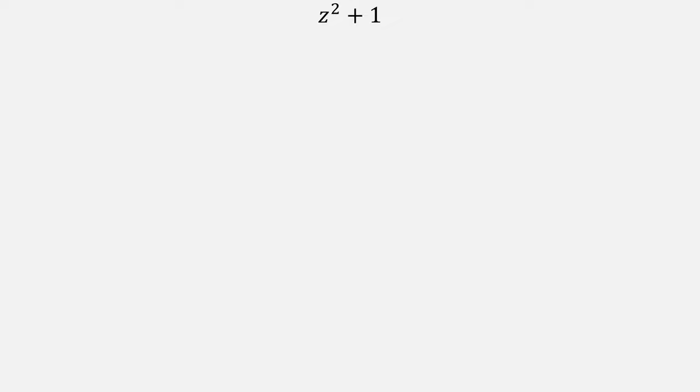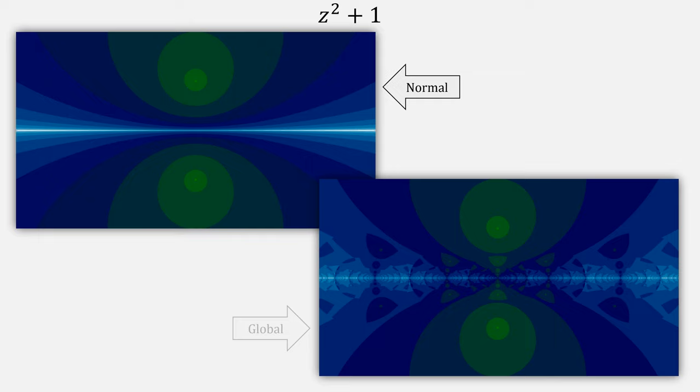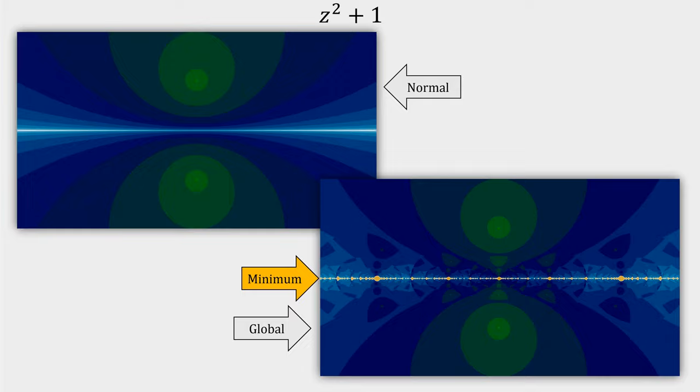Let's look at one other function, which is z squared plus 1, which has no real solution when you start with a real number. Here are the fractals we get for the normal and global versions of Newton's method. But actually picking a real number with the global one will converge to a minimum, and even some points around the real numbers will converge to a minimum.